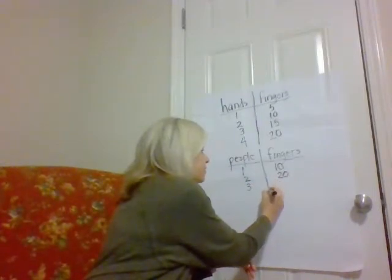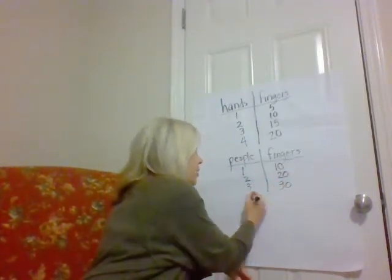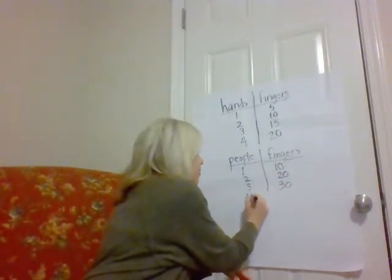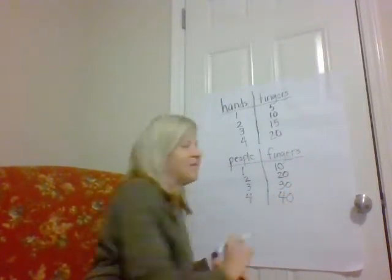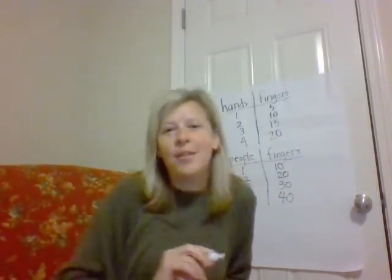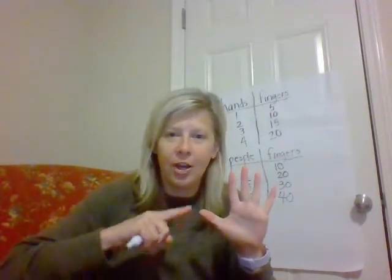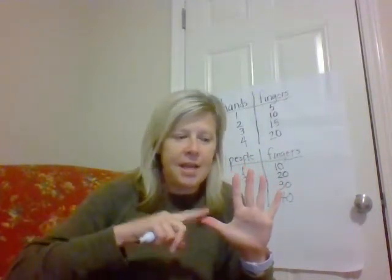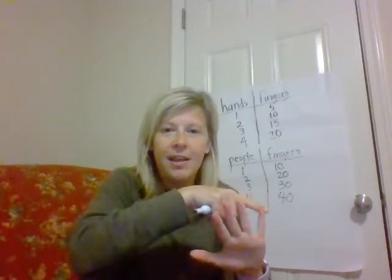Three people — 30 fingers. And what about if we had four people? 40 fingers. Think to yourself: what about if we had five people? Here are my people. Let's count by tens to see how many fingers we would have in that group: 10, 20, 30, 40, 50.